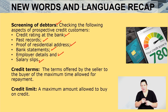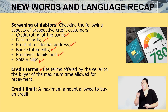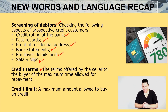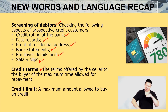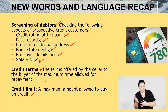We also spoke of credit terms. These are terms offered by the seller to the buyer of the maximum time that is allowed for them to pay their account. And then there is the credit limit, which is the maximum amount that debtors are allowed to buy goods on credit.